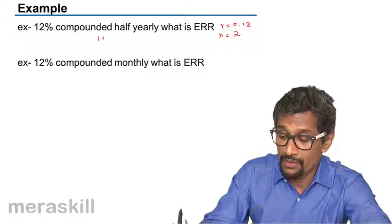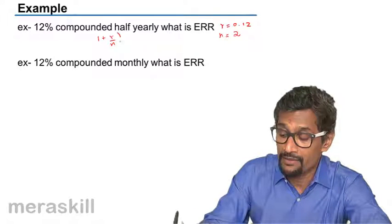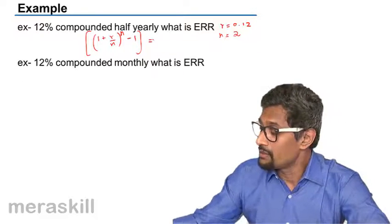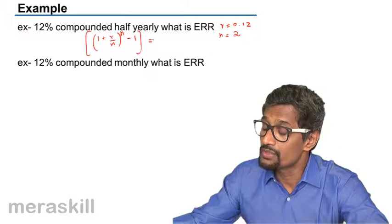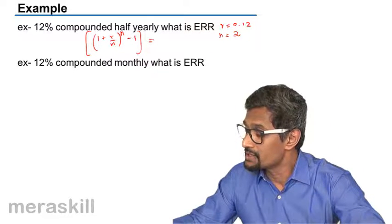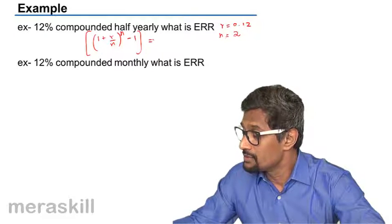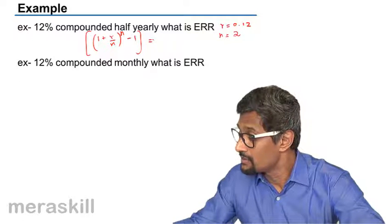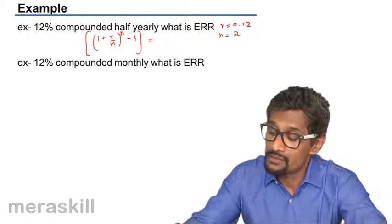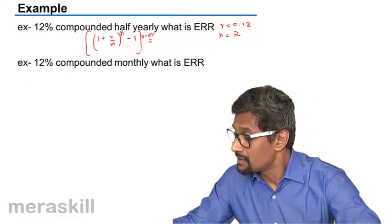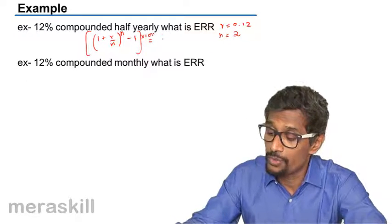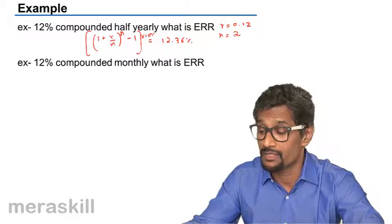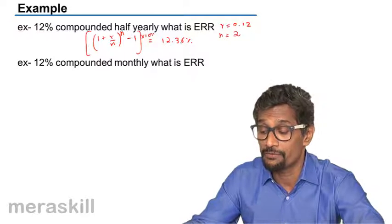So it's going to be 1 plus R by N raised to N minus 1. So what will that turn out to be? 1.12 divided by 2, so 1.06 raised to 2 minus 1 times 100. Turns out to be around 12.36%. So the nominal rate was 12% and the effective rate if you compound it half yearly is 12.36%.